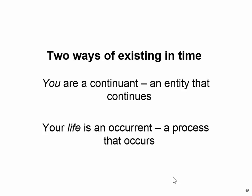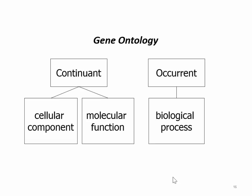This dichotomy between things and processes is absolutely central to BFO. This is the most basic dichotomy that BFO recognizes: the difference between continuants, which continue, and occurrents, which occur. This is captured in the gene ontology — we have continuants such as cellular components, and we have occurrents such as biological processes.